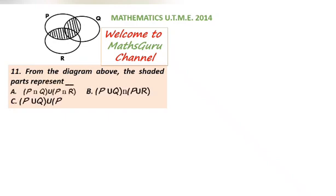A: P-Q union P-R, B: P union Q intercept P union R, C: P union Q union P union R, D: P intercept Q intercept P intercept R.